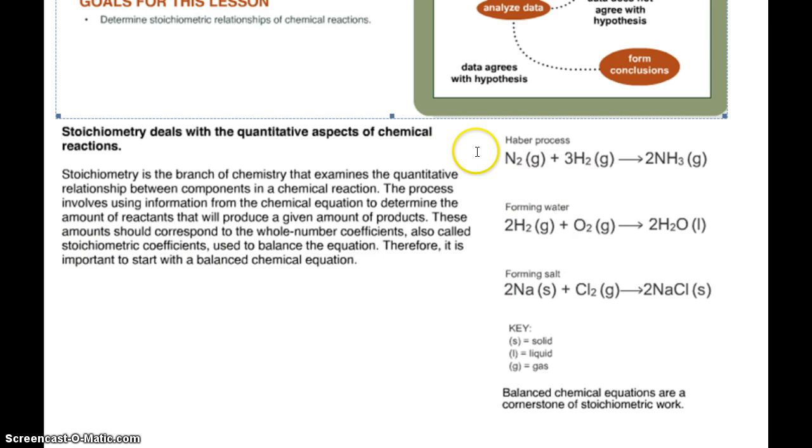All right so they call this the Haber process. So you have one molecule of N2 which is a gas plus three molecules of H2, a gas, yields two molecules of NH3. And if we look how many atoms of nitrogen are on the left side? Two. How many atoms of nitrogen are on the right side? Well we distribute this and there are two. How many atoms of hydrogen are on the left or reactant side? Well each molecule has two atoms because it's H2 and there are three copies of that. So we have six total hydrogens. Over on this side we have NH3 and we have two copies of it. So we have how many total hydrogens? Two times three is six.